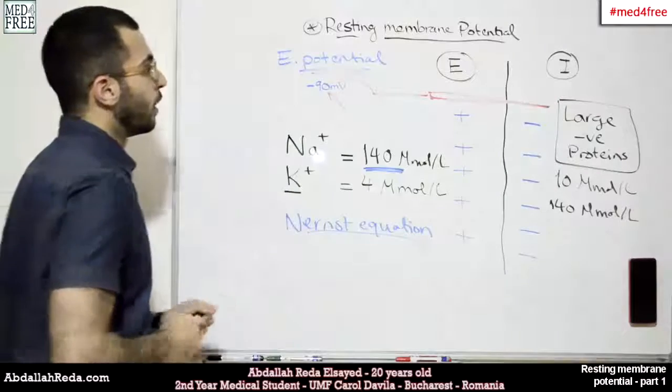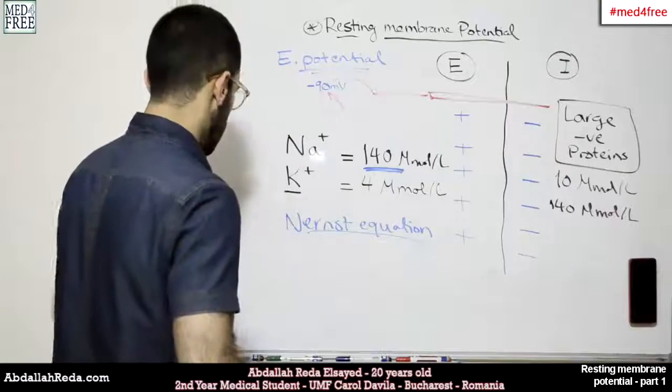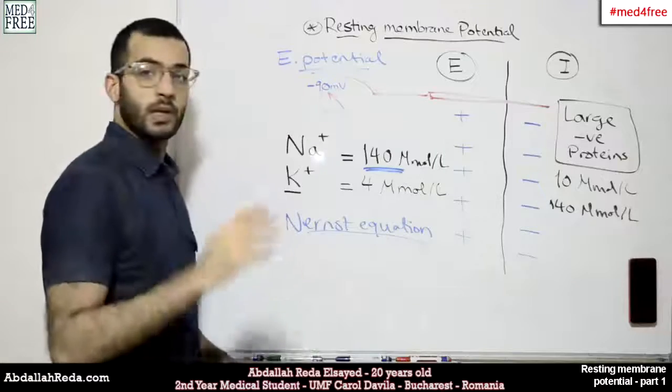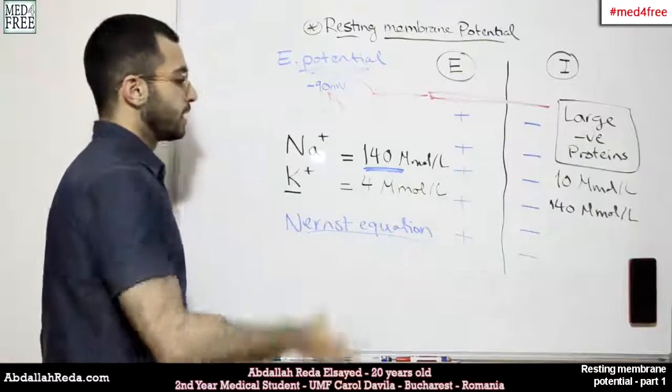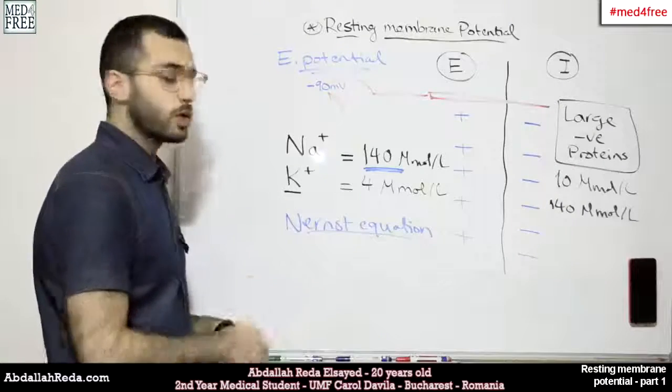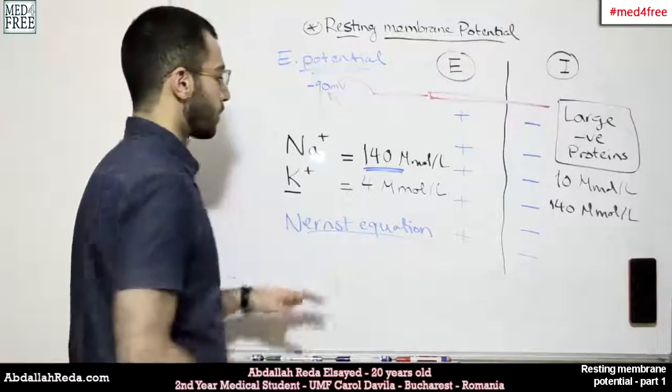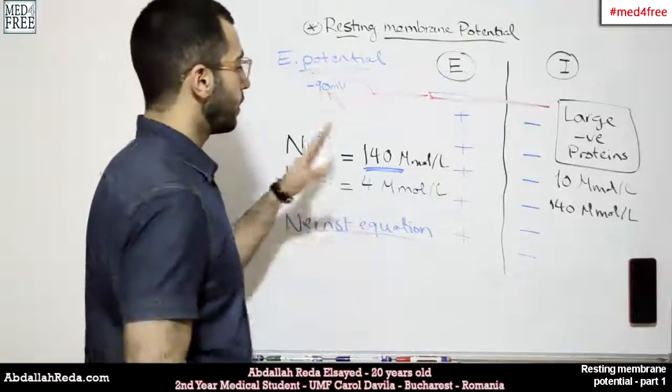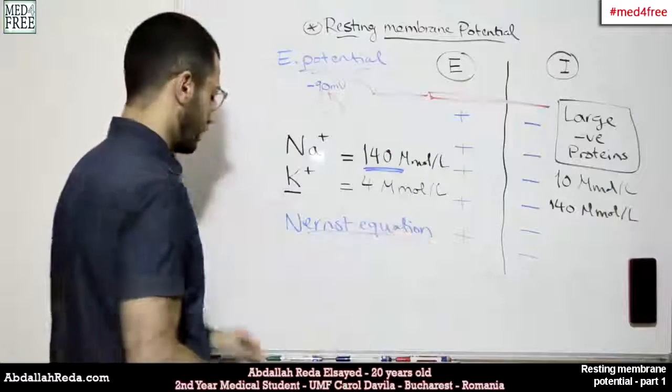It deals with calculating the equilibrium potential that would keep the equilibrium of a certain ion. What it does is that this electrical force would hinder or stop the flowing of the ion in its concentration gradient.